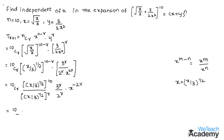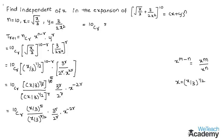In the next step, simplifying (x/3)^(1/2) to the power 10: since (1/2)×10 = 5, we get (x/3)^5. This is divided by (x/3)^(r/2), multiplied by 3^r / 2^r, multiplied by x^(−2r). Reciprocating the denominator term gives 3^(r/2) / x^(r/2) · 3^r / 2^r · x^(−2r).